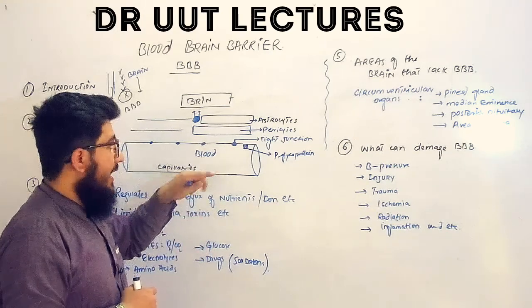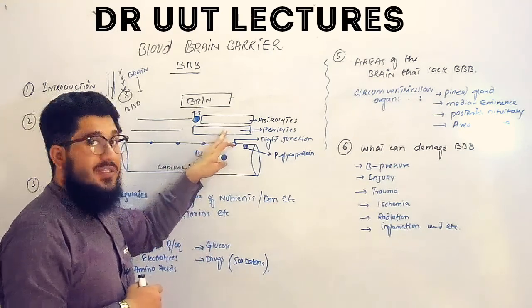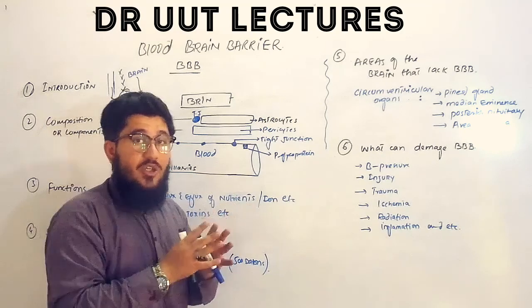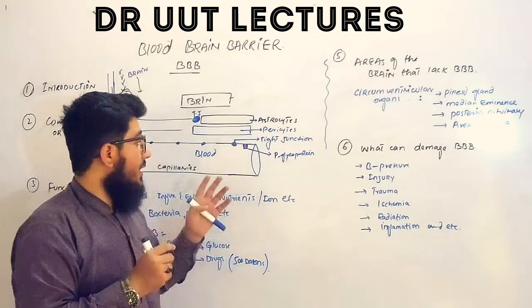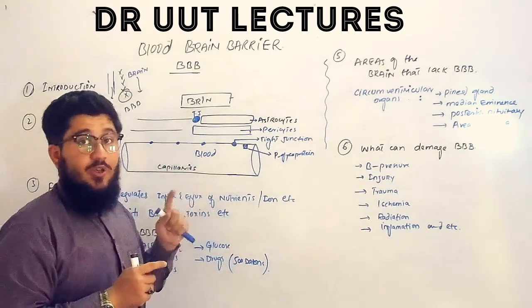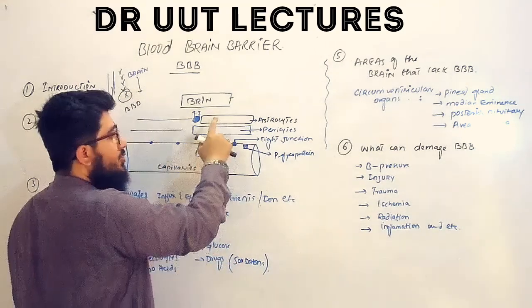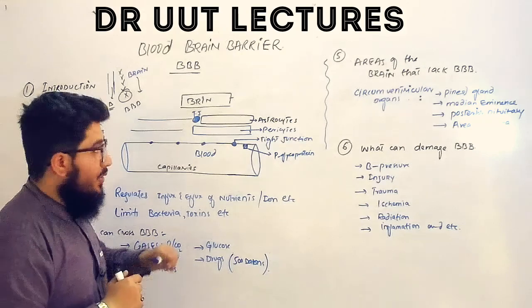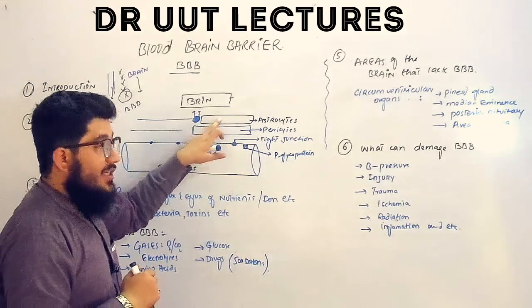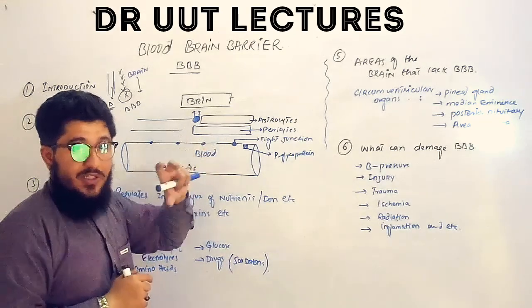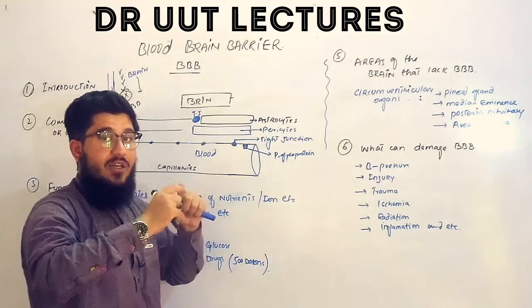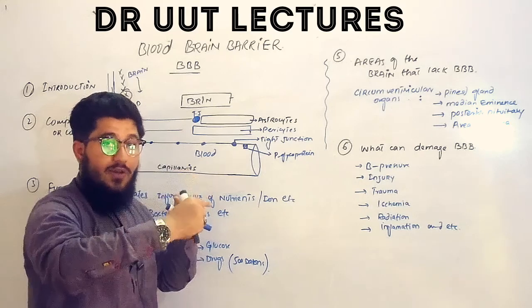The next component is the pericyte. Pericytes cover the blood capillaries, and through them the contraction and dilation of the capillaries is controlled.